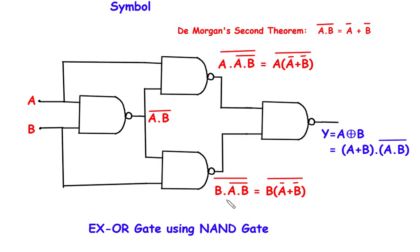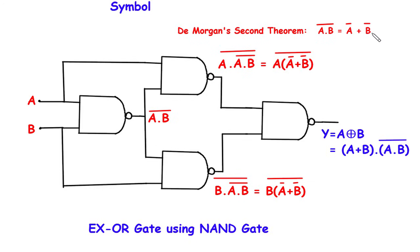Now same for this NAND gate. Here we can see the inputs will be A dot B whole bar as one input, and B as the other input. So the output for this NAND gate will be B dot A dot B bar, whole bar. Again according to De Morgan's second theorem, A dot B bar can be replaced by A bar plus B bar.